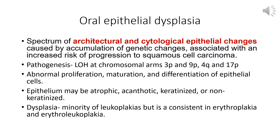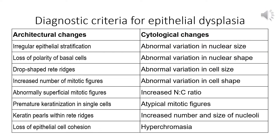The epithelium may be atrophic, acanthotic, keratinized, or non-keratinized — what is important is that dysplasia must be present, defined by specific cytological and architectural features. A minority of leukoplakias are associated with dysplasia, but a significant percentage of erythroplakias and erythroleukoplakias are associated with dysplasia.